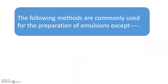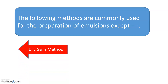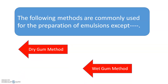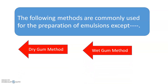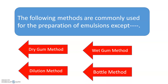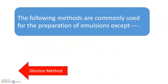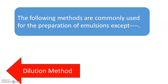The following methods are commonly used for the preparation of emulsions, except: dry gum method, wet gum method, dilution method, or bottle method. The correct answer is dilution method — except the dilution method, all other methods are commonly used for the preparation of emulsions.